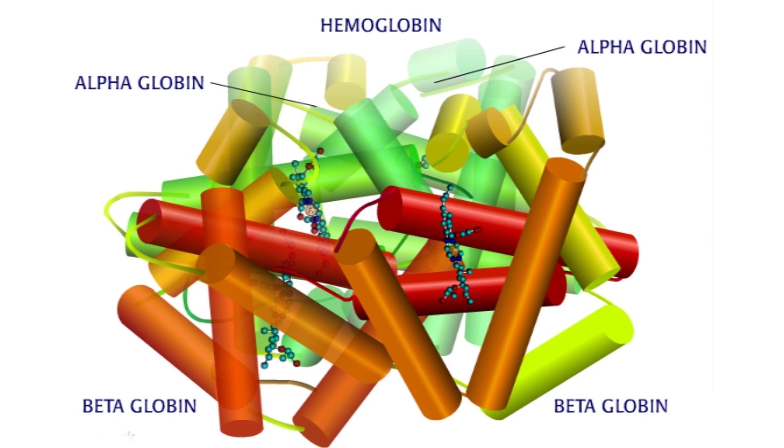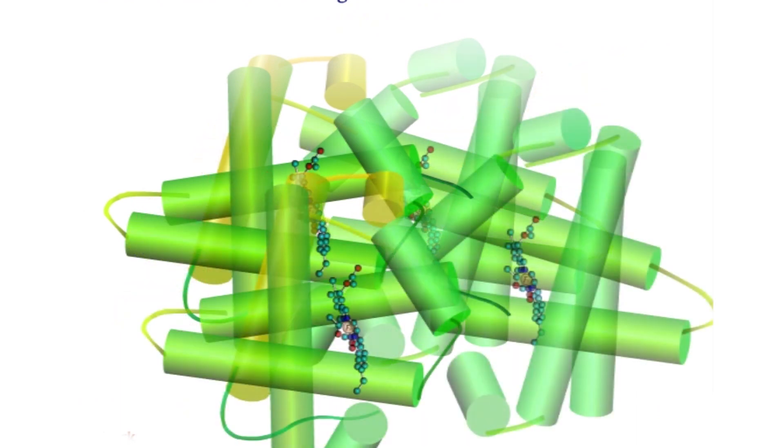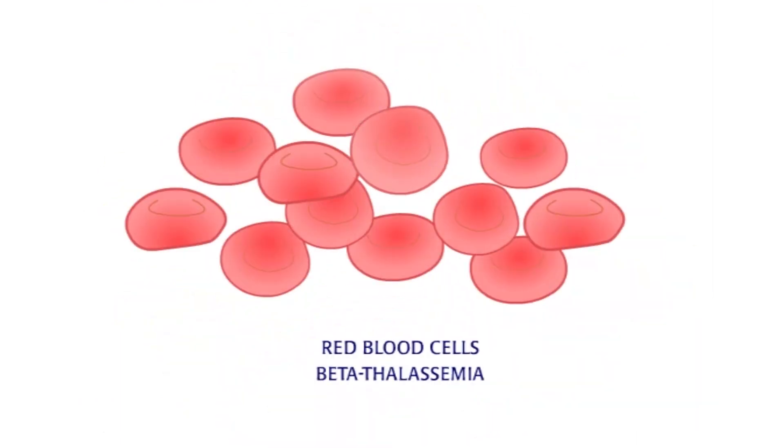When the beta globins are not made, the alpha globins accumulate inside new red blood cells. There is nothing for the alpha globins to bind with, thus no hemoglobin is made. Without hemoglobin, oxygen cannot be delivered properly.